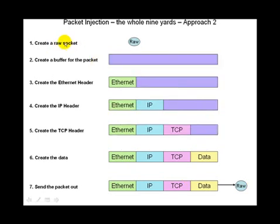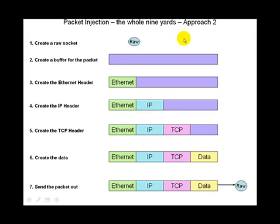The second technique involves creating a raw socket and then creating a buffer for the packet itself. We take a large enough buffer — say we want to create a packet of size 1500 bytes, we create a packet buffer of size 1500. For the first 14 bytes we create the Ethernet header in this buffer itself, using the same memory location. Then we create the IP header in the next 20 bytes, assuming no options field. After that we create the TCP header, and then fill in whatever data we want to send. Then we send this out through the raw socket created in the first step.